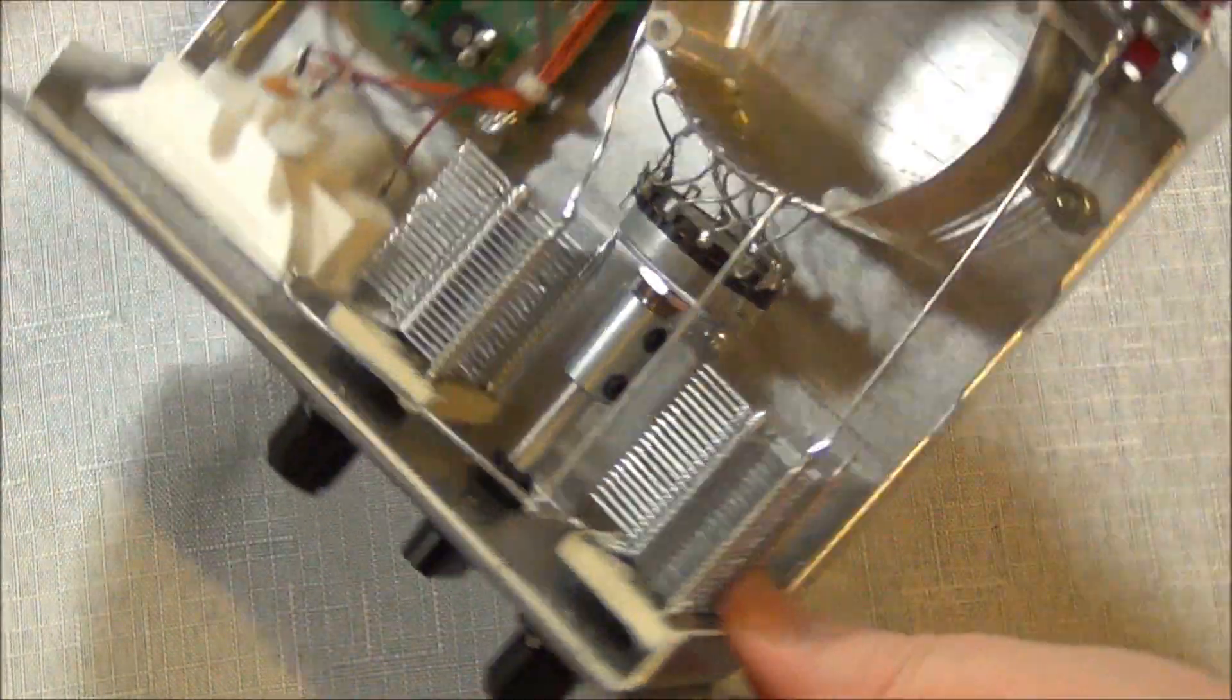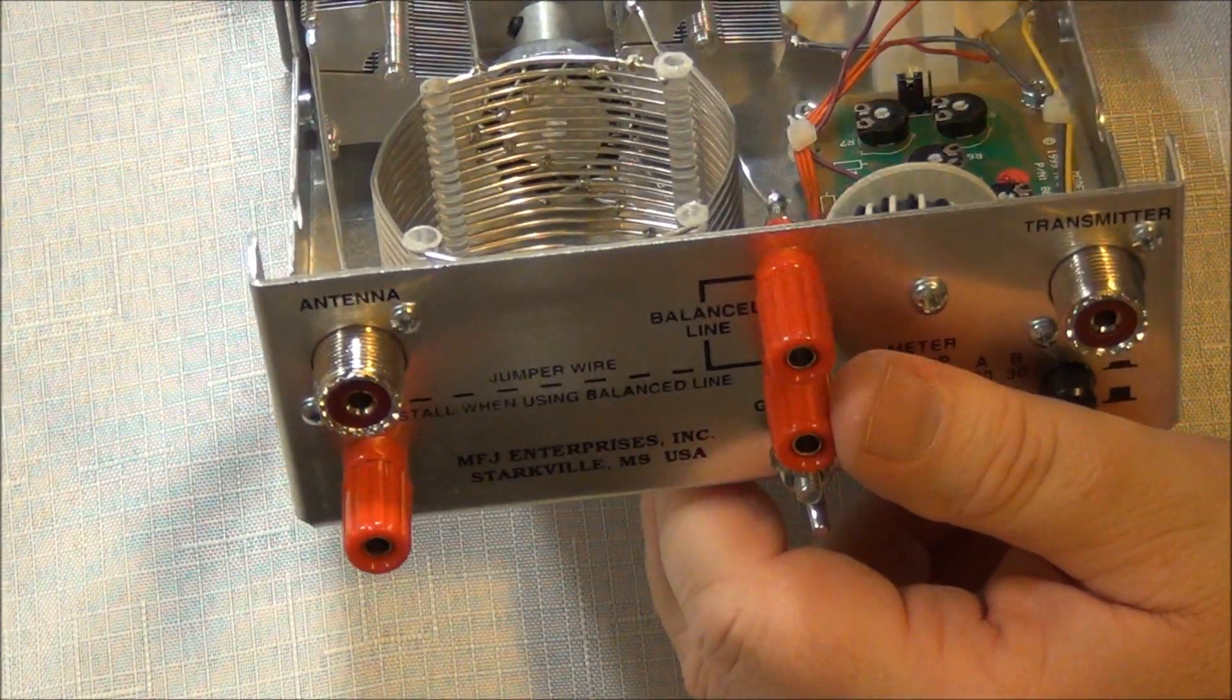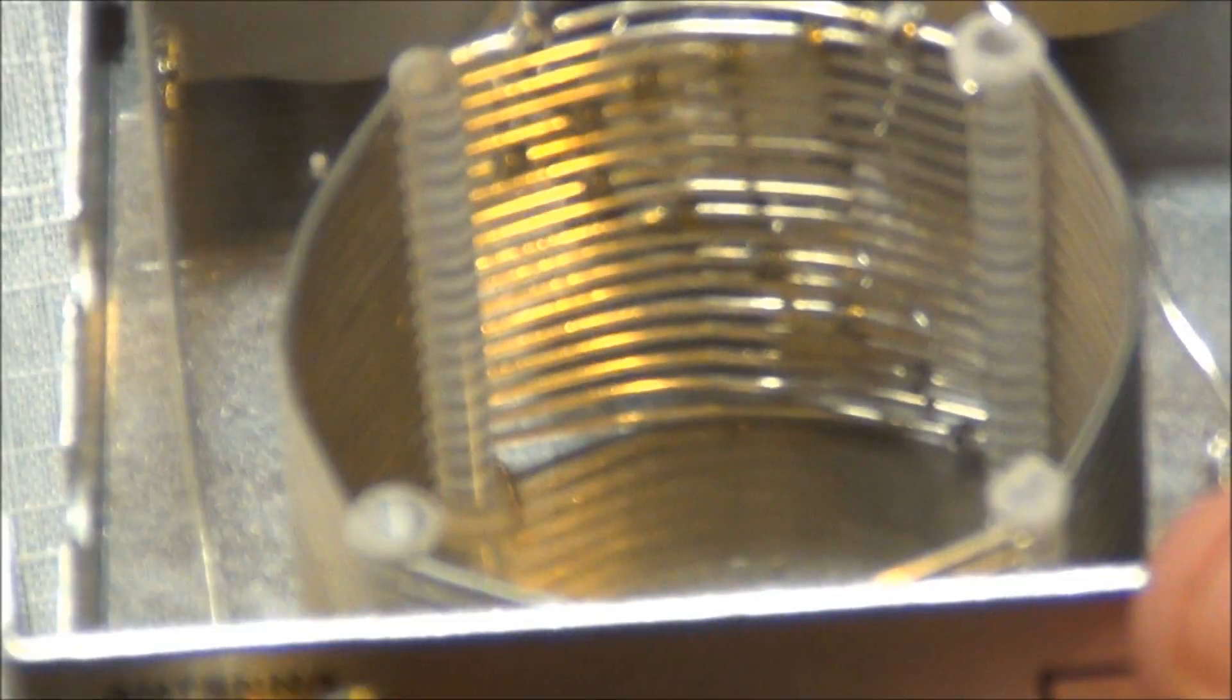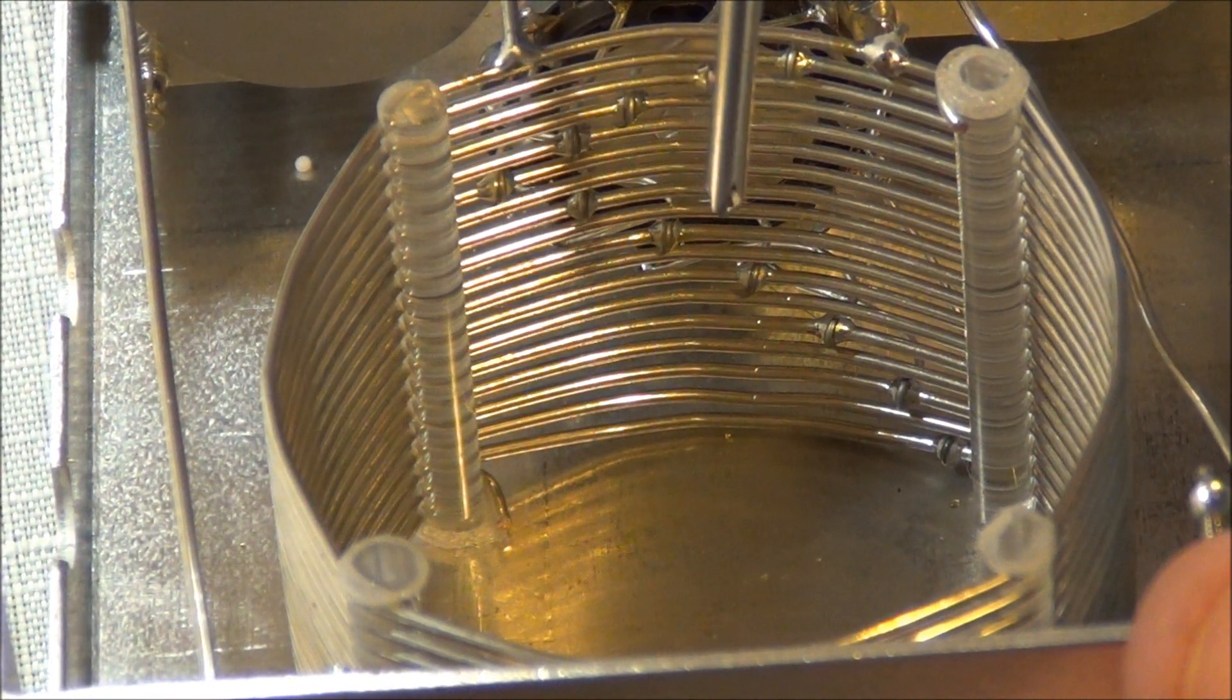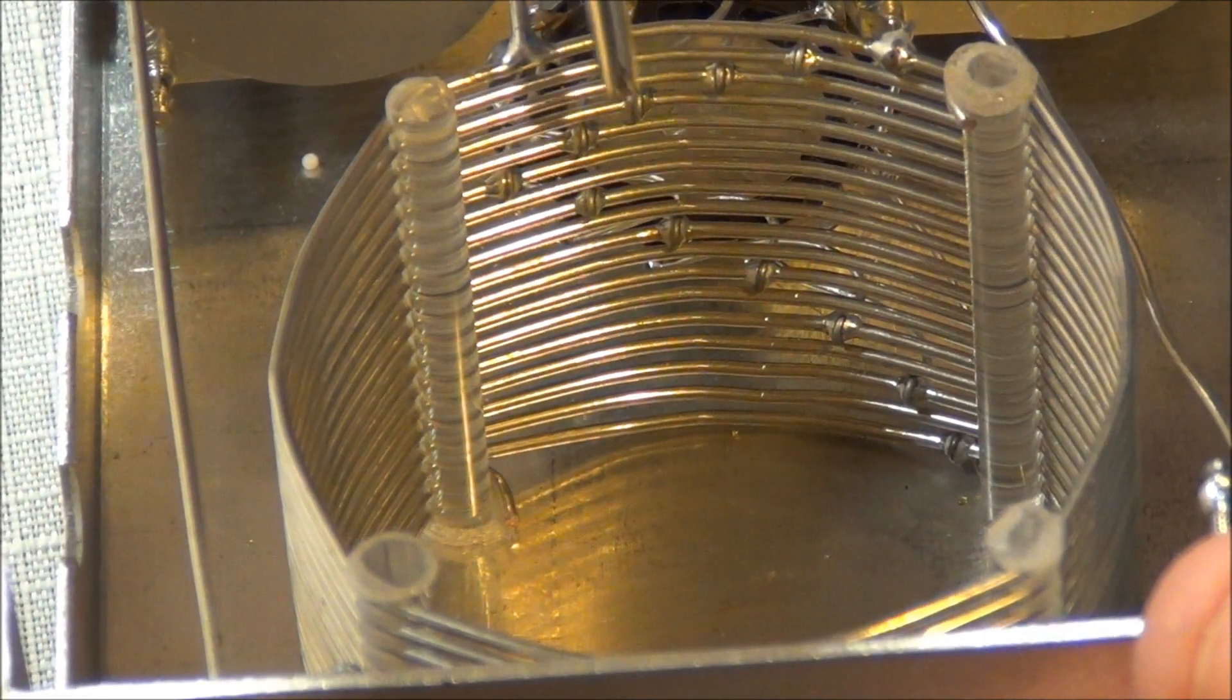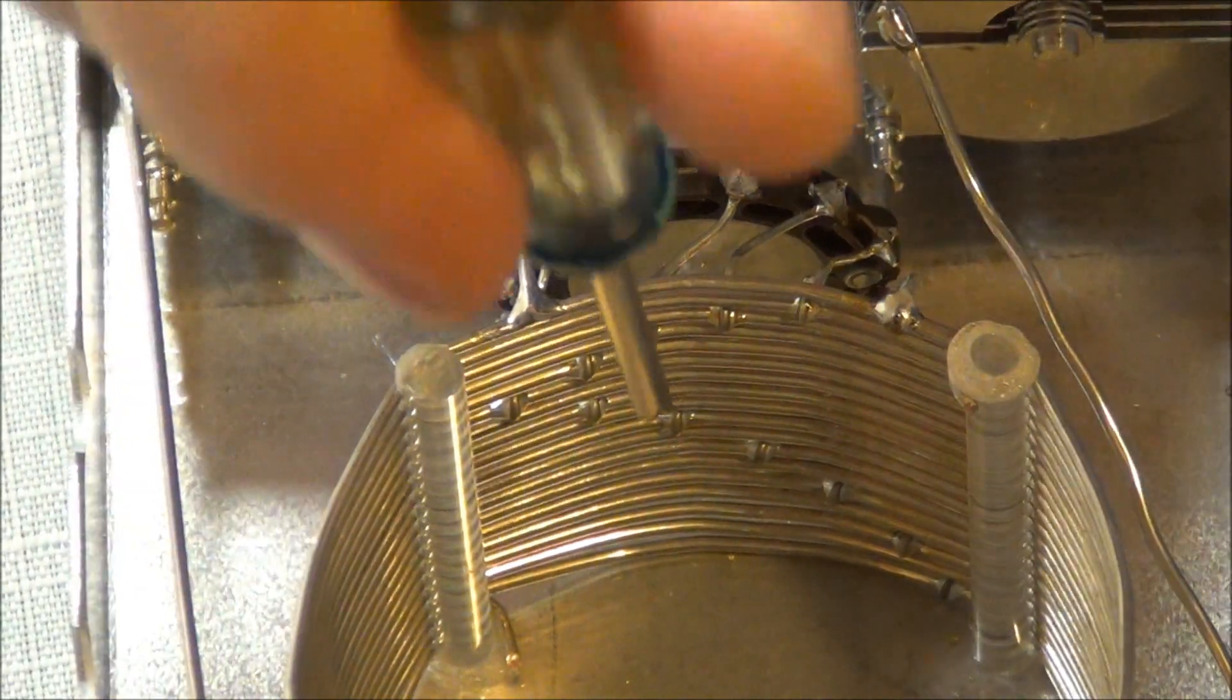Basically you're just picking off a... you can see where the switch... let's see if I can zoom this in here so you can see it. When you rotate the switch, you're just picking a different point in the inductor.